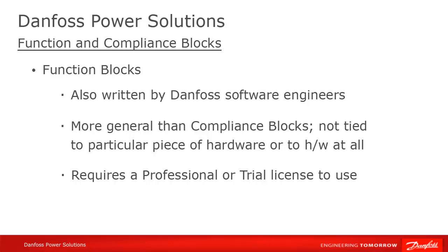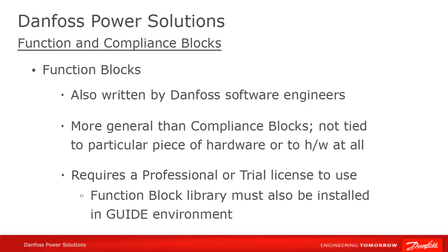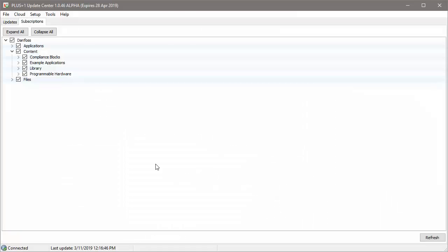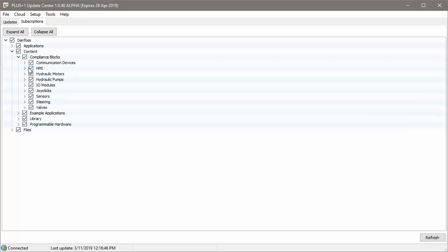What's more, if someone sends you a program with a function block in it, you will not be able to modify it. In order to use function blocks in a new or existing project, you must have: a) the proper license — either a professional or a trial license — and b) have the function block installed in your Guide environment. Remember that the easiest way to get function blocks, as well as compliance blocks, HWDs, and new versions of Guide, is to use the Update Center.